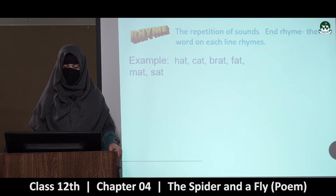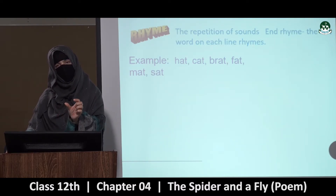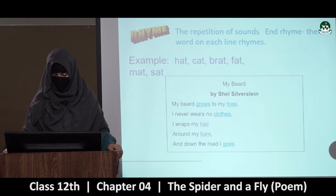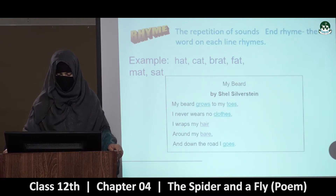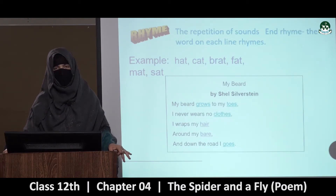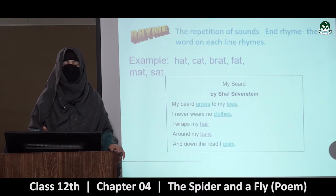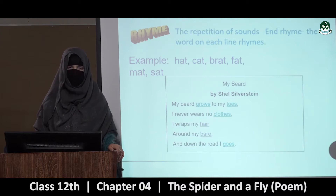Examples of rhymes: hat, cat, brat, fat, mat, sat — is tarah ke words pe lines mostly finish hongi. Toh woh rhymed poetry hai. 'My beard grows to my toes, I never wears no clothes, I wrap my hair around my beard and down the road I goes.' Aapko pata hai hota nahe hai, lekin yahaan pe poetic license hai — poet ko apni poetry likhne ke liye, beishak woh grammatically ghalat bhi ho, us word ko use karne ki license milti hai. Underline words mein aapko rhyme milenge.